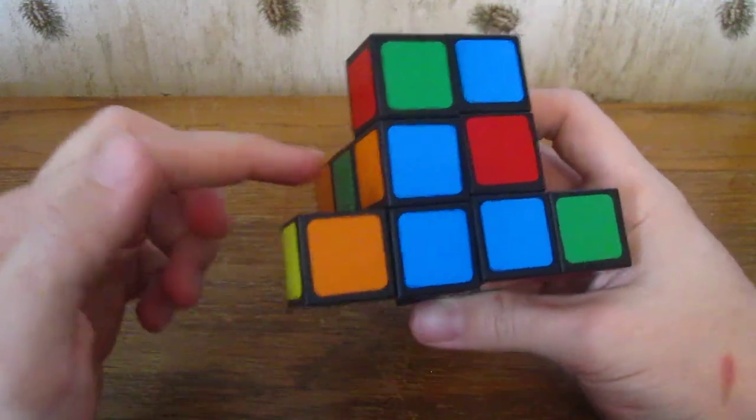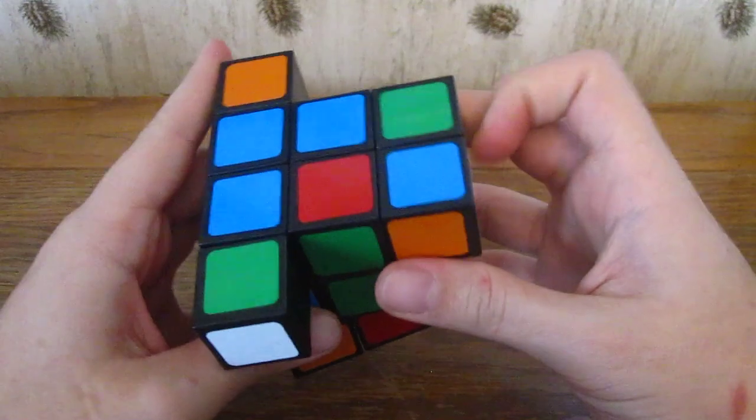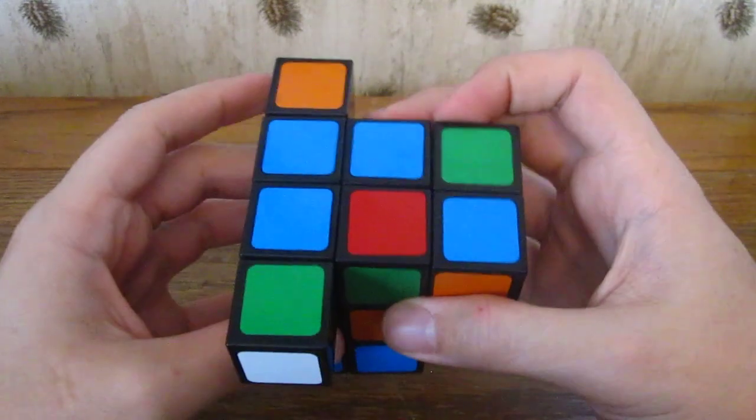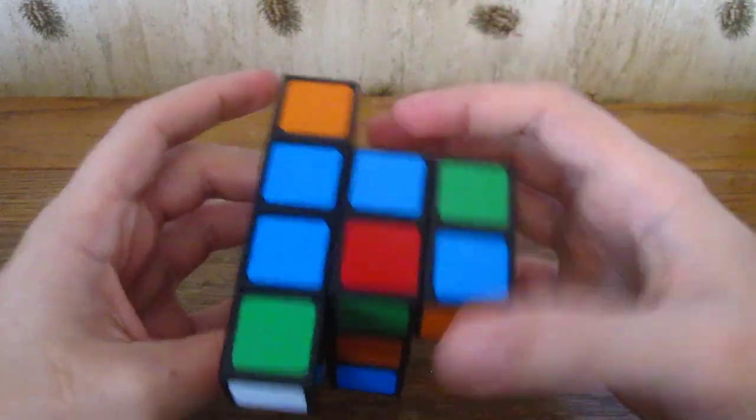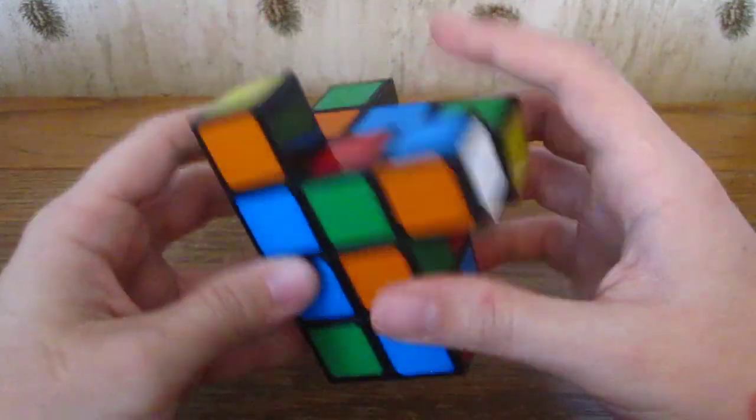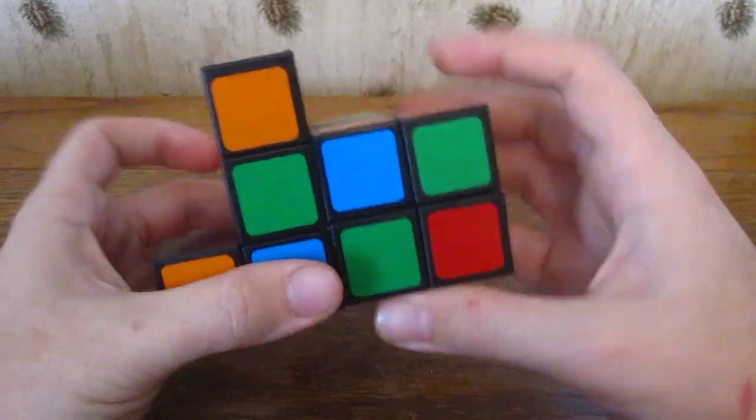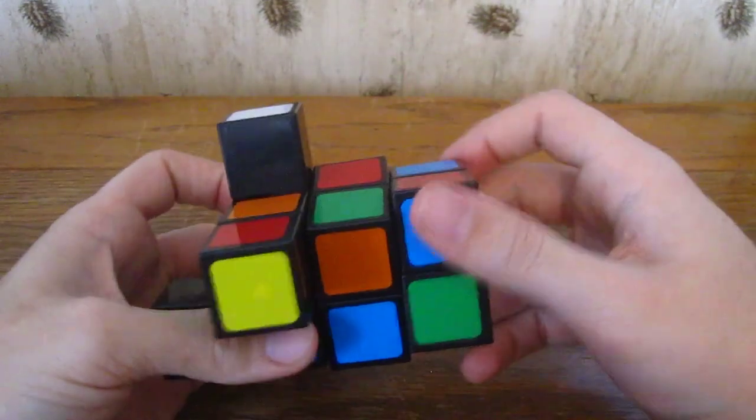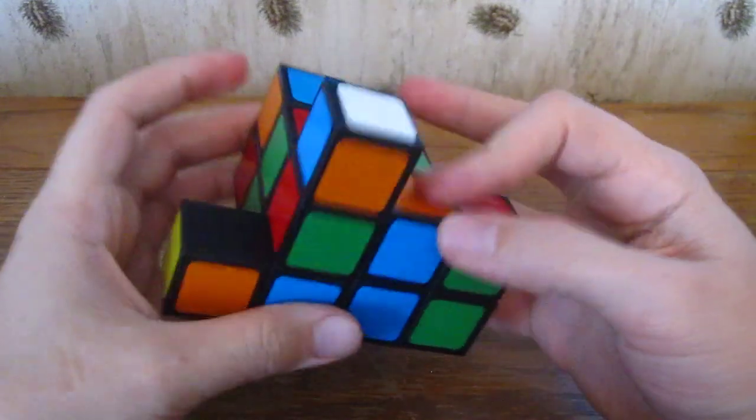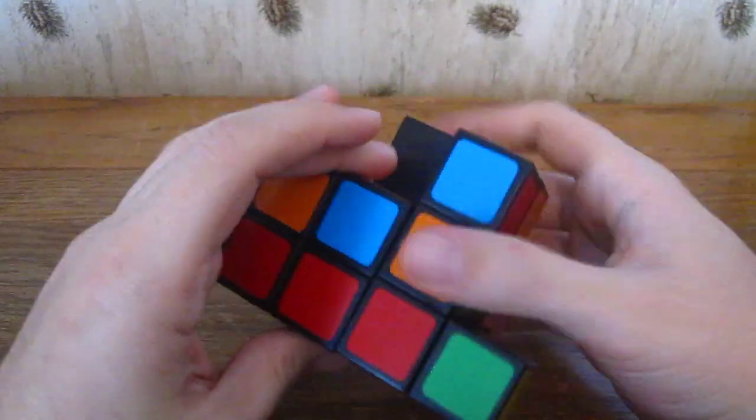Now I have blue blue red red. Here's blue and orange, but we want the orange to be opposite the red. I need to move it over here. Move it into the top layer, then move it over here, move it down and out of the way, and back. We're getting close to our first layer being complete.